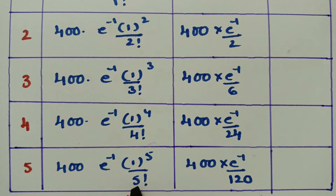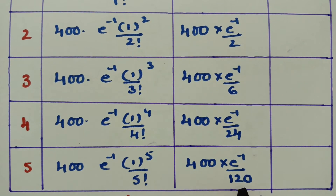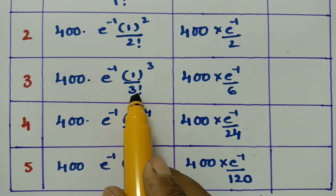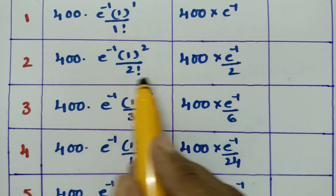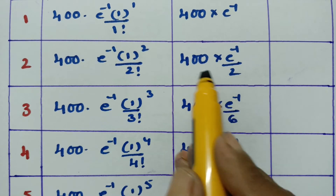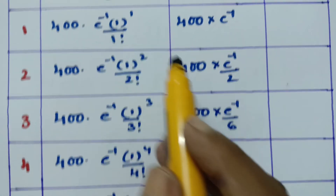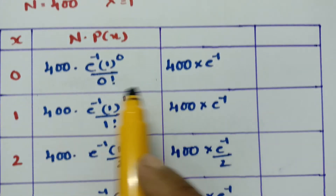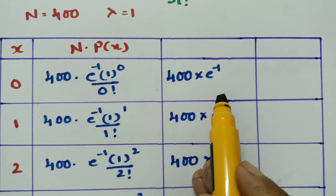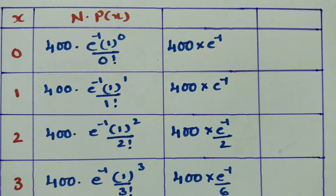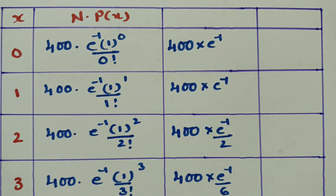Note that 5 factorial is 120, 4 factorial is 24, 3 factorial is 6, 2 factorial is 2, 1 factorial is 1, and 0 factorial is 1. We will be getting all these values once we calculate.